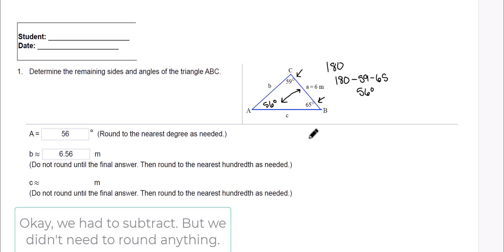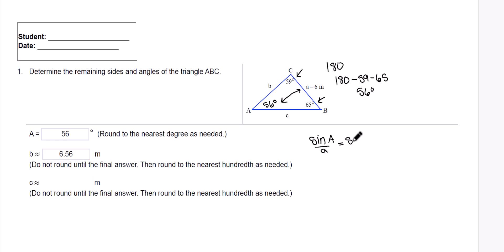And that's what I'm going to use. I'm going to say the sine of A over A equals... Now we're doing C, so I'm going to have the sine of C over C. Now let's fill in what we know. We know that A, sine is 56 degrees, over side A, which is 6.